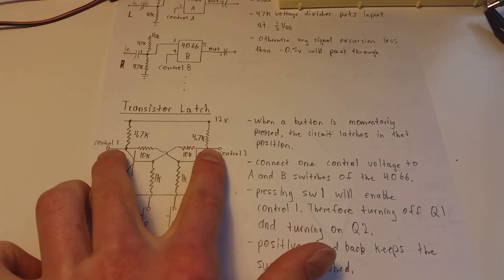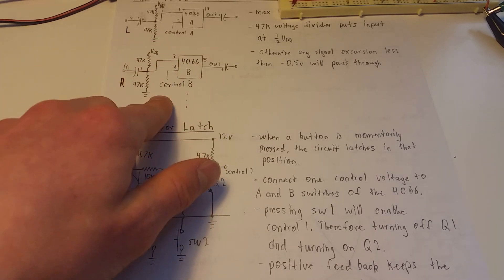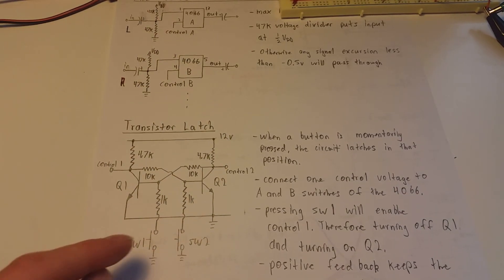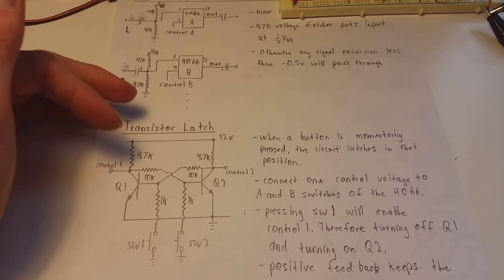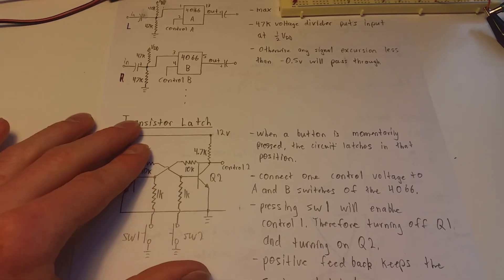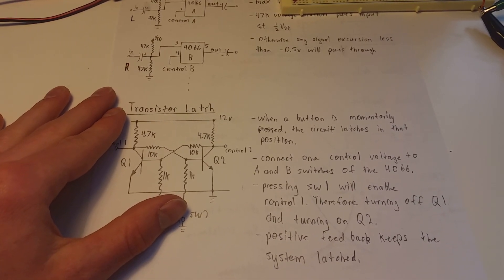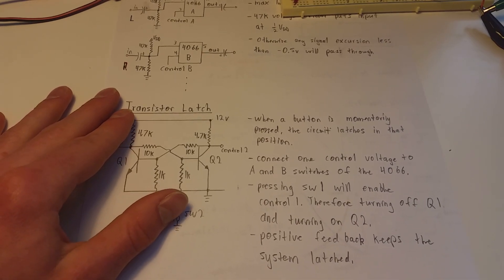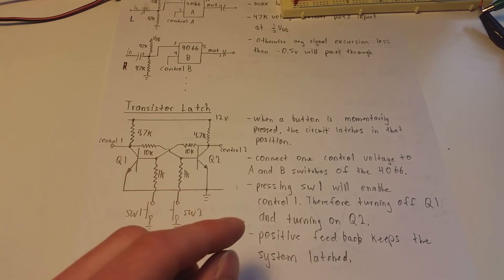You can connect one of these two collector voltages to these two here. So if you press switch one, it'll enable it. If you press switch two, it'll disable both those controls at once, thus turning on and off your equipment. Now, if you press switch one, that will enable the control one, like I just said.